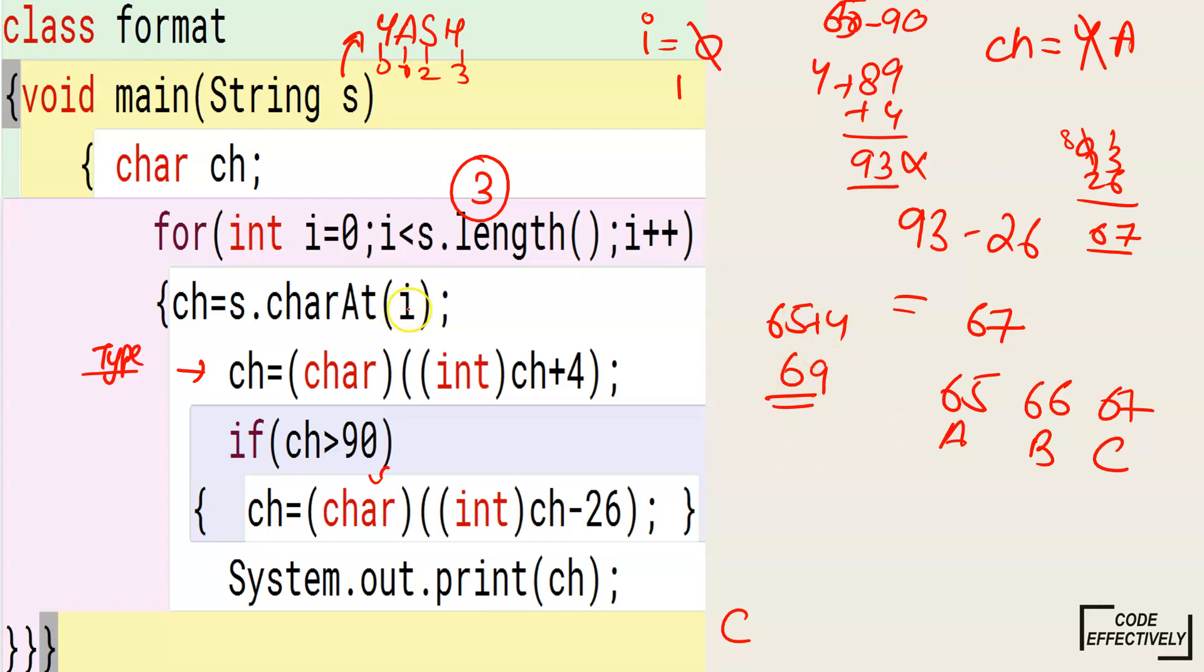Now it will convert 69 back to a character. You know 69 is a character. Let's see, we were here at 67. Now let's take it: 68 and 69, it's D and E. It will be less than 90, so this condition would not be executed this time. 69, E. It's E. So it will be printing E: C, E.